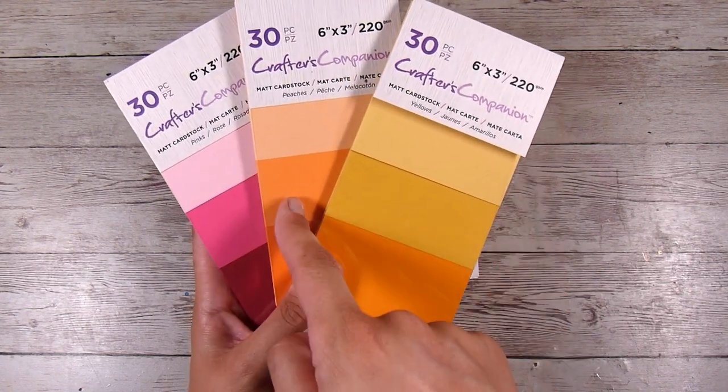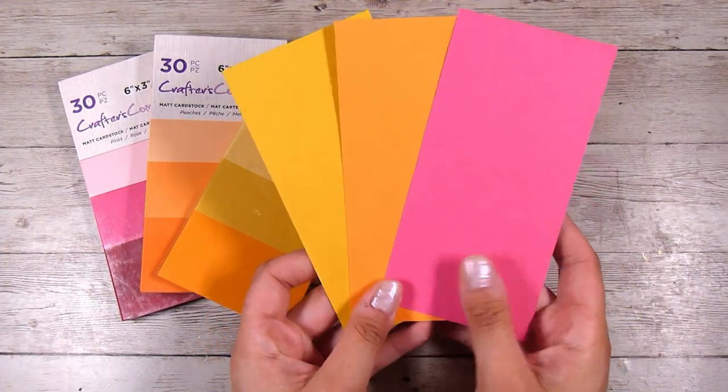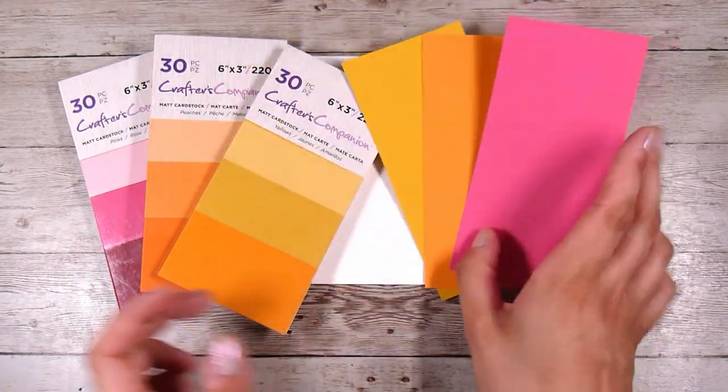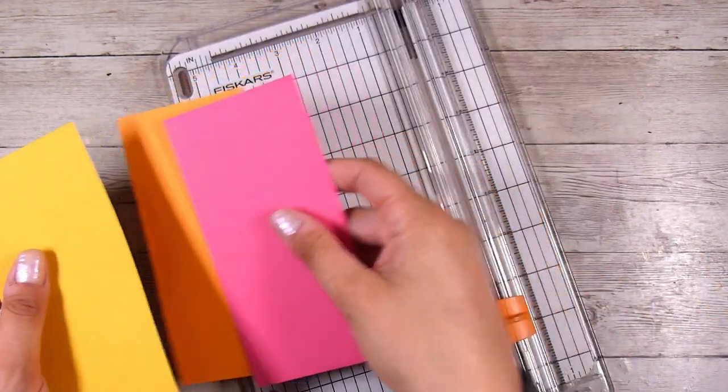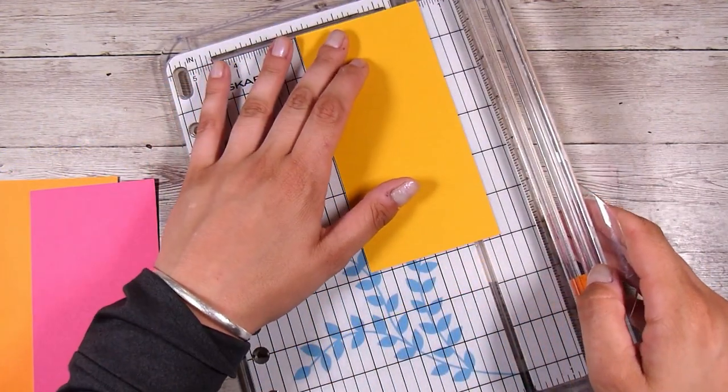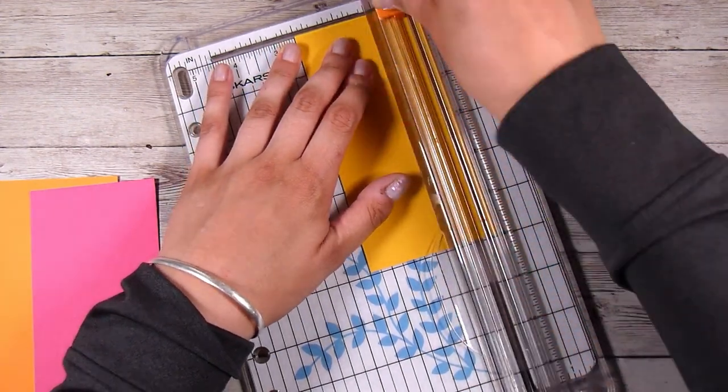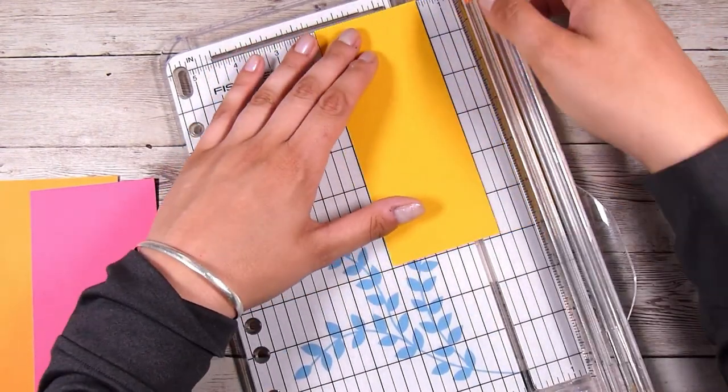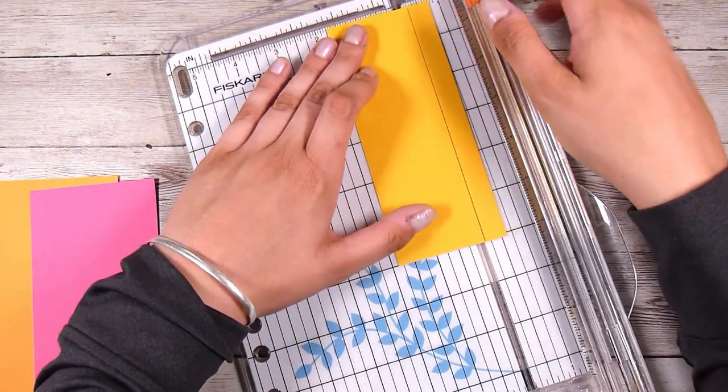But for this I'm going to use these Crafter's Companion 6x3 sheets of paper and I am just choosing three of them out of these sets. These are such handy sets to have in my stash. I don't carry much colored paper at all but these felt like a good size so I could still have a range of colors if I didn't want to use my inks. Coloring paper with inks would work just fine too.